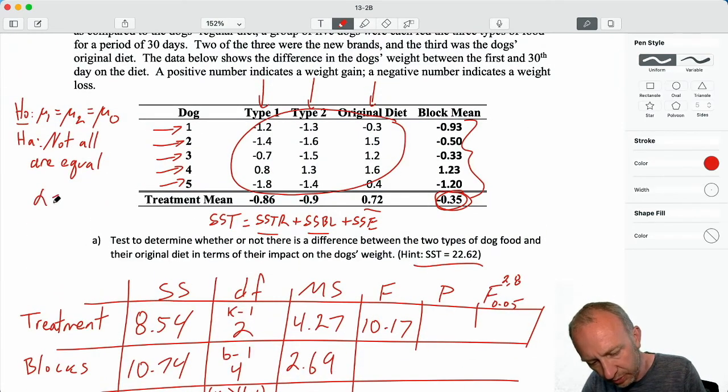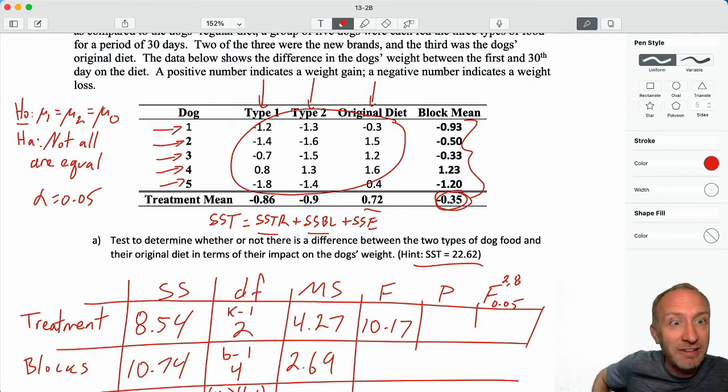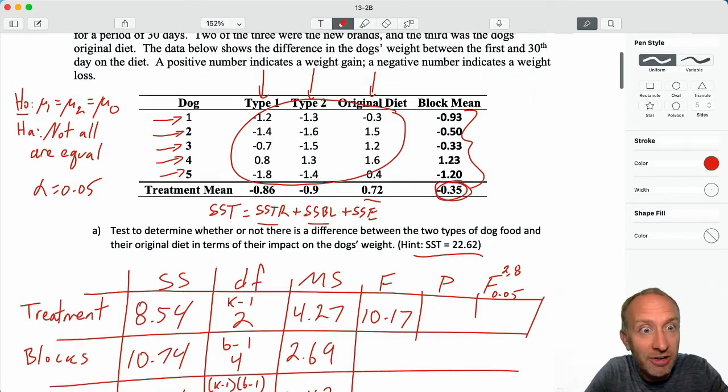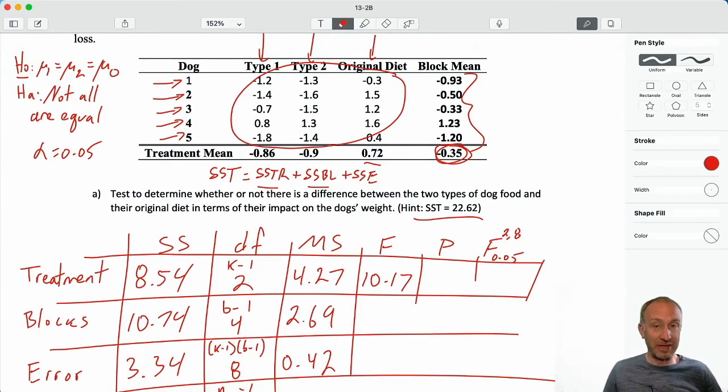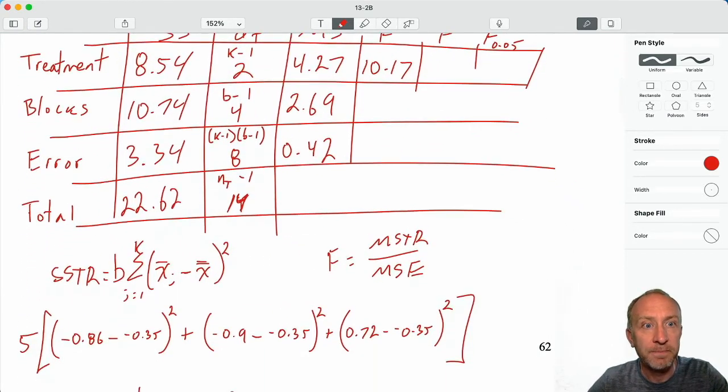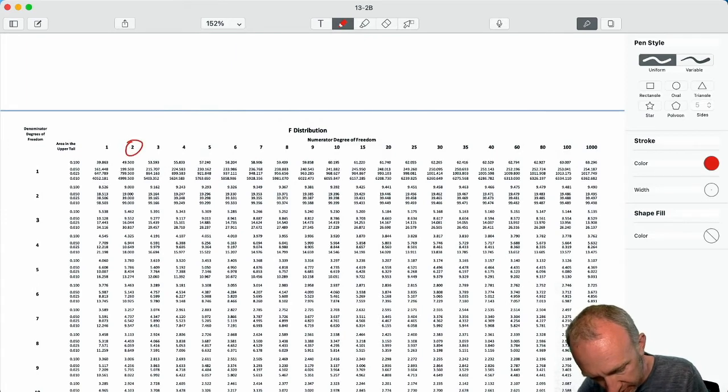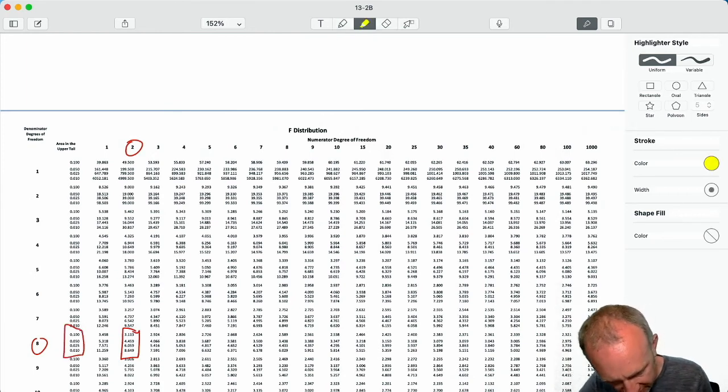Alpha will assume 0.05. Everybody remembers what alpha stands for. We haven't really talked about it since module 9. Remember, that's my level of comfort in committing a type 1 error. A type 1 error here would mean I believe that one of these treatments is different when in fact they're not. So let's go down to our F tables, 2 and 8 degrees of freedom. Here's 2 and 8. There's my numbers of interest. Here's that critical value, 4.46.